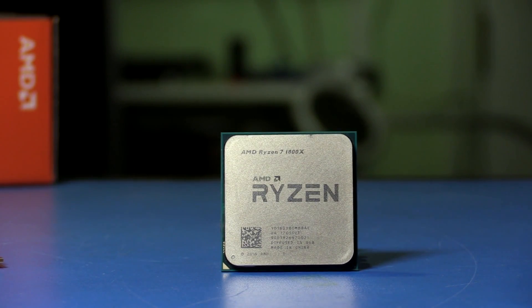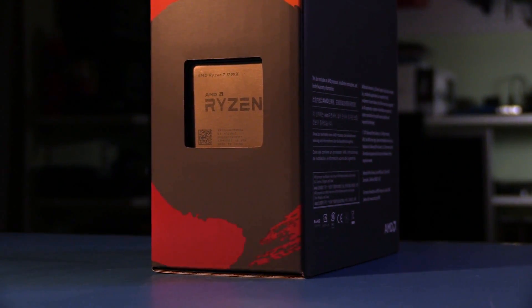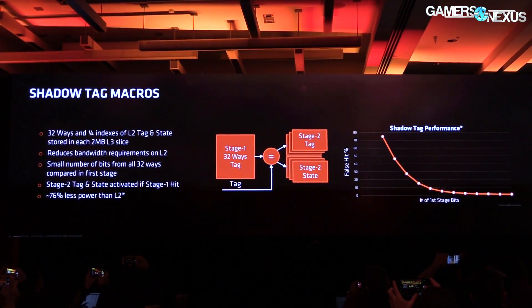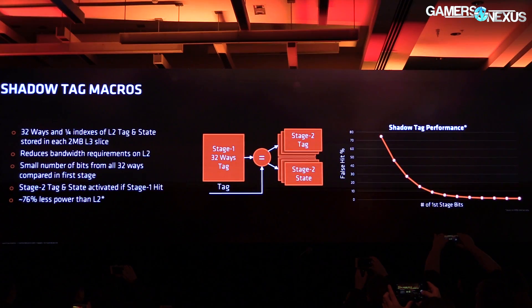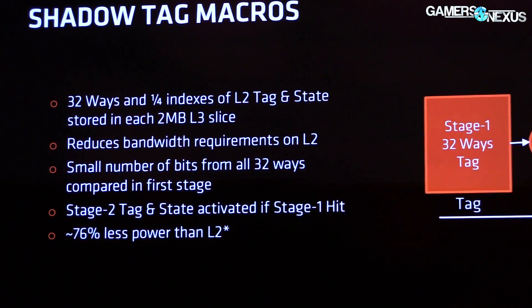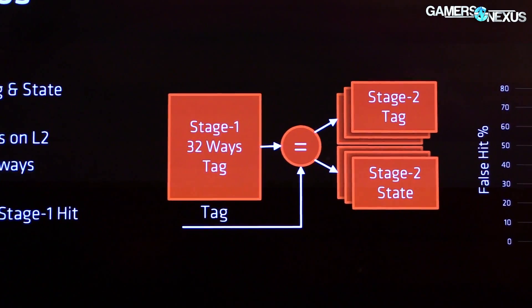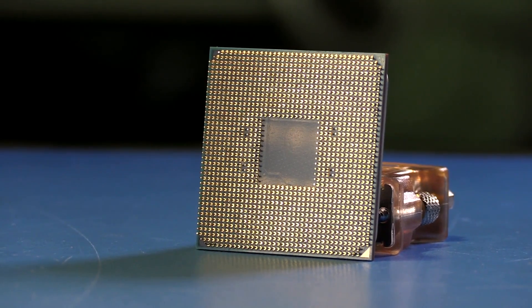The shadow tags were another nice optimization. We have a victim cache for our L3, and when a core misses in its L2, it might miss in the L3 but the data could be in another L2 cache local to another core. Typically we'd probe all of them, which causes performance problems with bandwidth and burns a lot of power. Instead, we built shadow tags within the L3 macro, letting us quickly know which core has the data. We also implemented a two-stage mechanism: a partial lookup determines whether we'll hit, and only the second stage fires on a hit. This saves about 75% of power compared to an equivalent implementation.